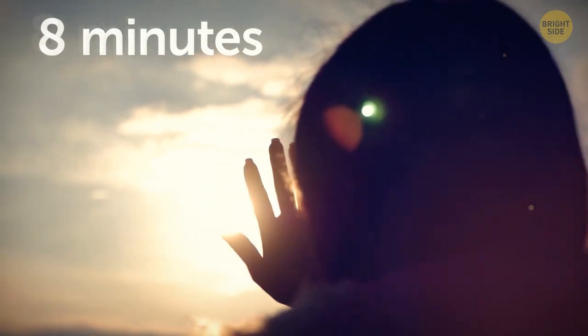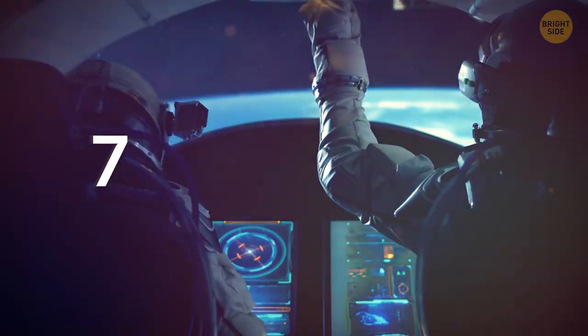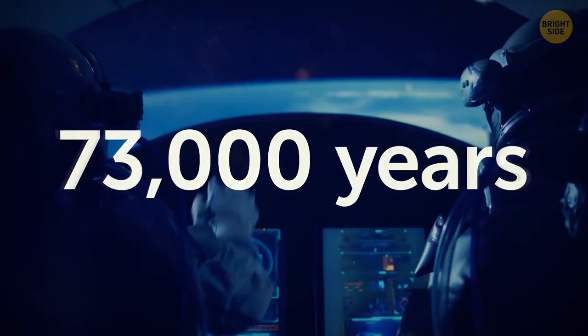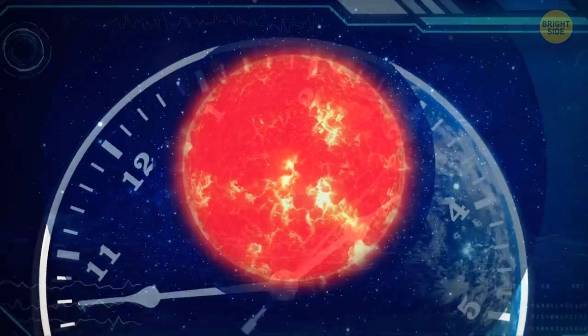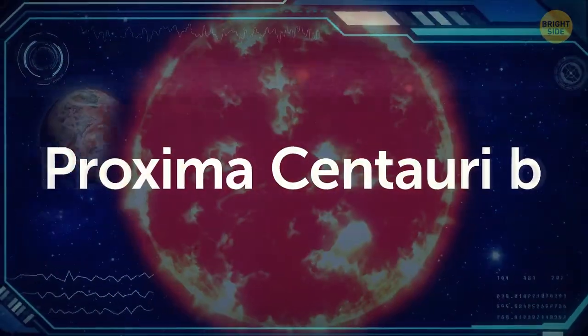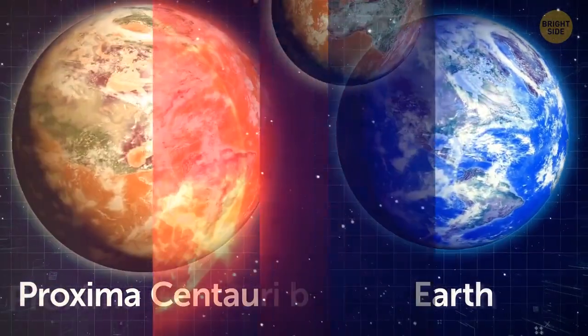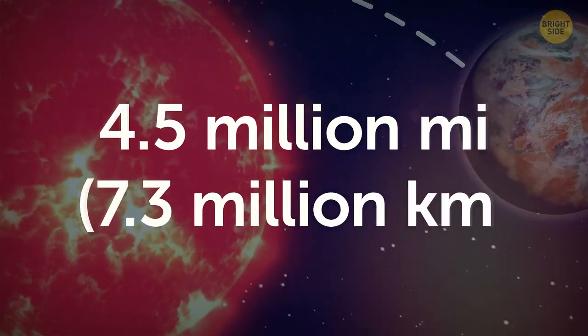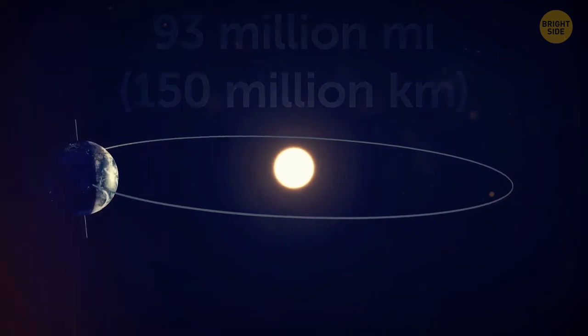This star system is 4.2 light-years away. That's how long it takes a photon of light to travel from this star to Earth. By comparison, it only takes 8 minutes for sunlight to reach our planet. If you decided to travel to Proxima Centauri, it would take you about 73,000 years to fly there in a conventional rocket. That's longer than our intelligent civilization has even existed. But it's not the star itself that interests us. It's the planet orbiting it. That's Proxima Centauri b. It's 70% bigger than Earth and about 10% heavier. It orbits its star at a distance of 4.5 million miles. By comparison, Earth is 93 million miles away from the Sun. That's 20 times farther.